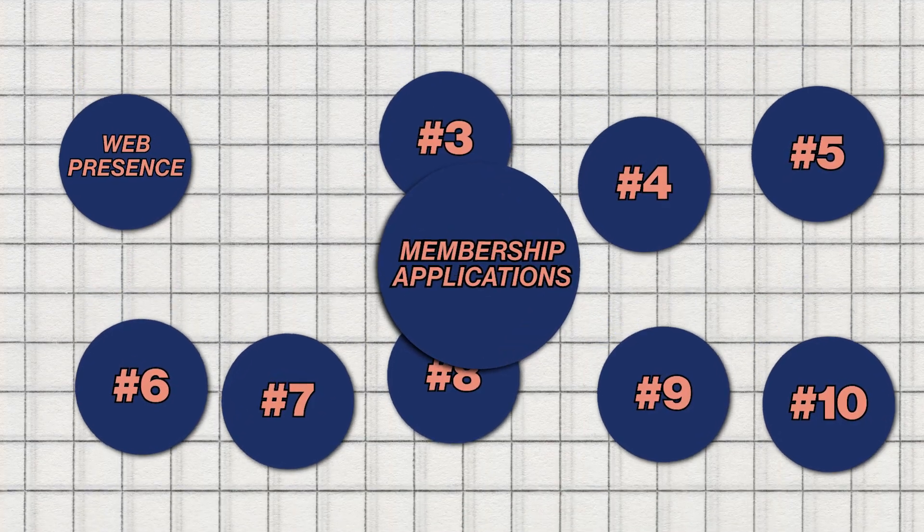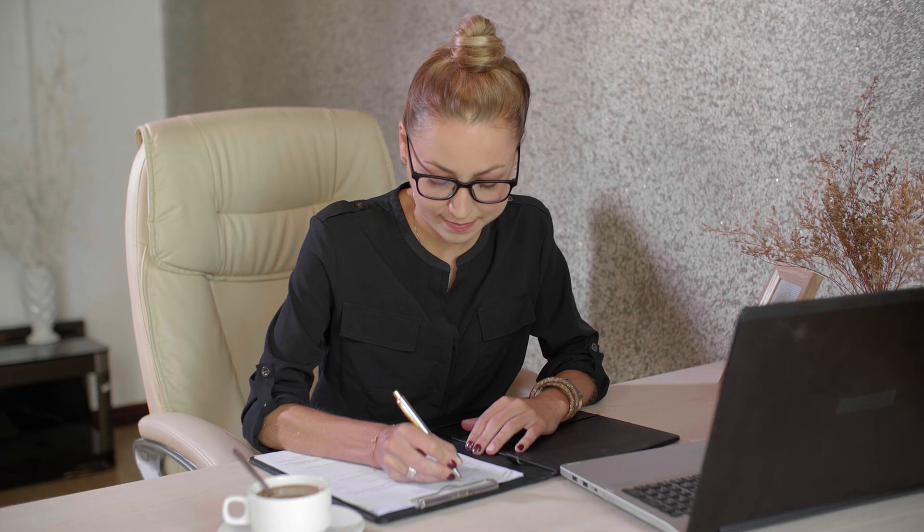Moving on to number two, membership applications. It's lovely to attract new members, but let's address the elephant in the room — it can be a pain, especially in the olden days when members mailed in a physical form or filled out a PDF that had to be reconciled and processed. With modern membership software, applications can have a status, go into a queue, wait to be processed, and then the data is automatically put into your member database. This streamlines the process so that all members have the correct information in the right format, stored and ready to be leveraged.